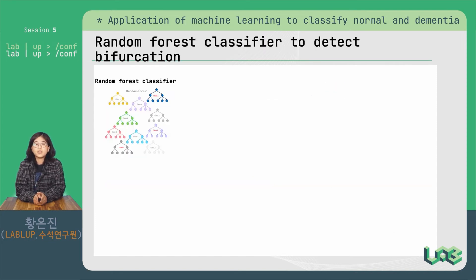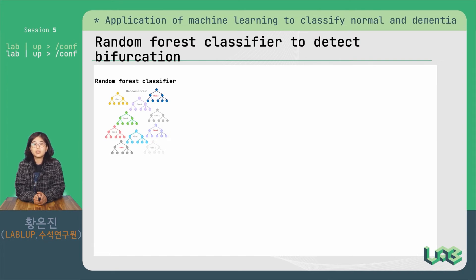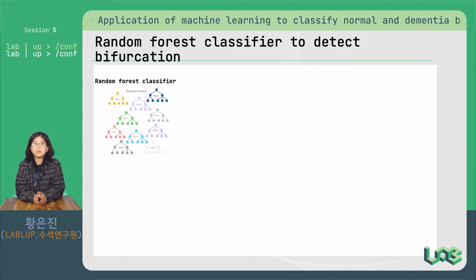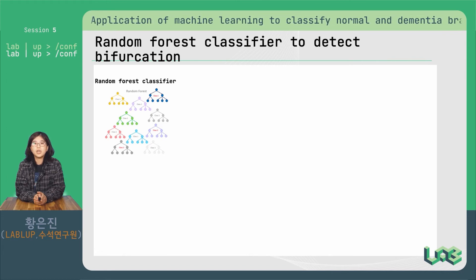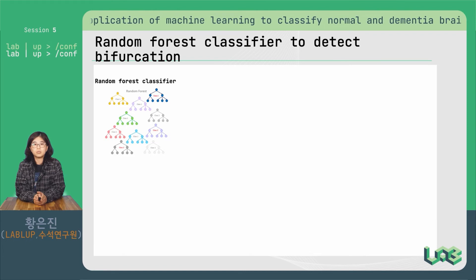To further investigate what is happening at this characteristic time point around the age of 31 weeks, we trained a machine learning classifier with EEG features and tested whether the classifier could tell the difference between control and AD groups in a time-dependent manner. We used a random forest model to classify the two groups of mice. Random forest is an ensemble learning method using multiple decision trees for regression or classification, giving a non-linear decision boundary suitable for high-dimensional complex patterns and automatically selecting important features to make the model interpretable.